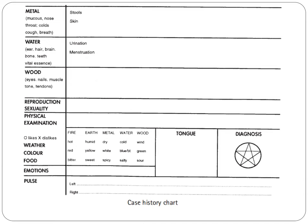For wood, we need to ask about the eyes, nails, muscle tone, and tendons. For reproduction and sexuality, we ask about menstruation and reproduction. Under physical examination and likes and dislikes, we ask about weather preferences — cold and food. For the fire element, we note if symptoms relate to hot, red, or bitter sensations.